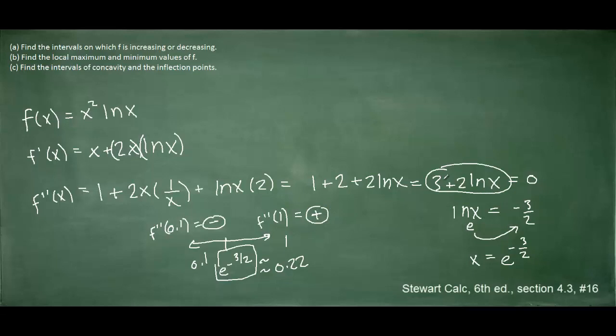The fact that the second derivative is negative tells us that the function is concave down. We'll indicate that with an upside-down parabola symbol on the left side of e to the negative 3 halves. The second derivative came out positive on the right side, so the function is concave up there. Now we can write our intervals of concavity using the number line analysis.